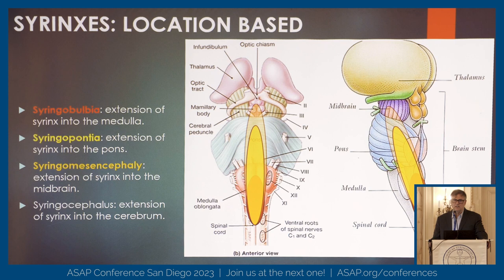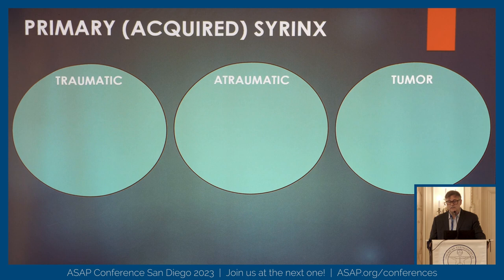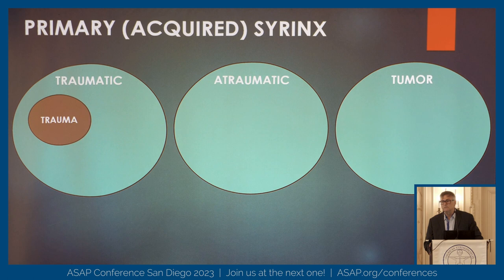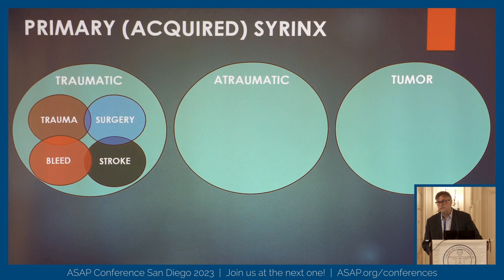These can occur secondary to a number of different types of injuries. They can be traumatic in nature. They can be atraumatic. They can be tumor-related. Trauma can be direct trauma — bullets, knives, bone shards going into the cord. Surgical-related: anytime you operate in the cord, you're creating trauma. Bleeding, usually from a vascular malformation or trauma. Stroke, where you basically don't get enough oxygenated blood to the cord and it dies.